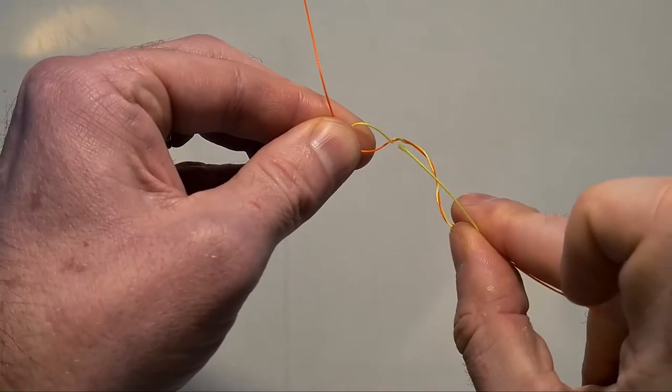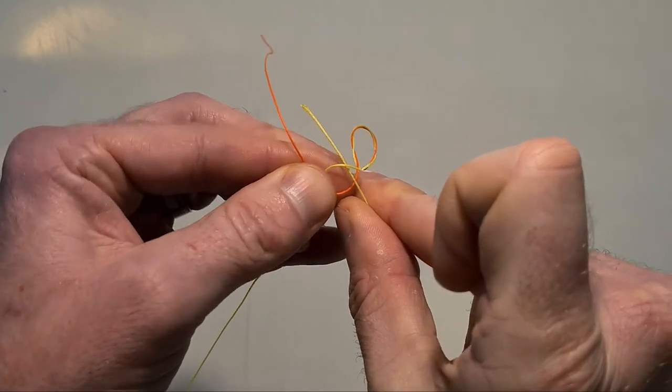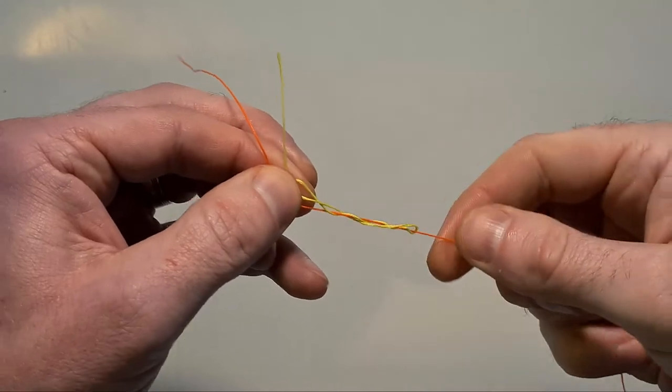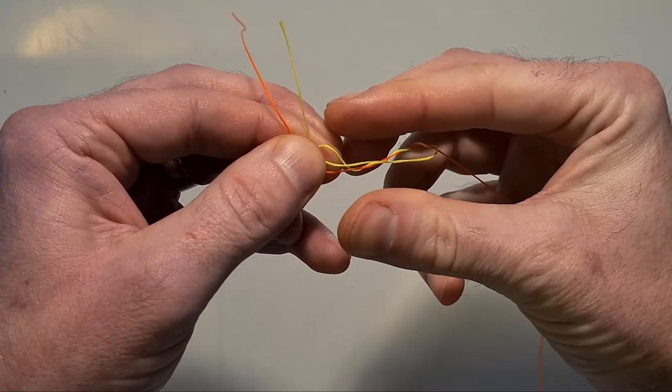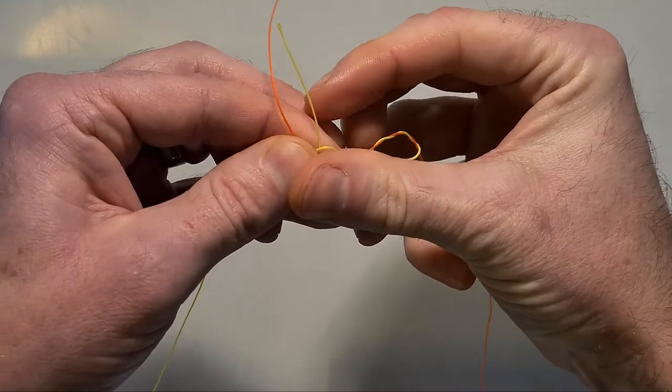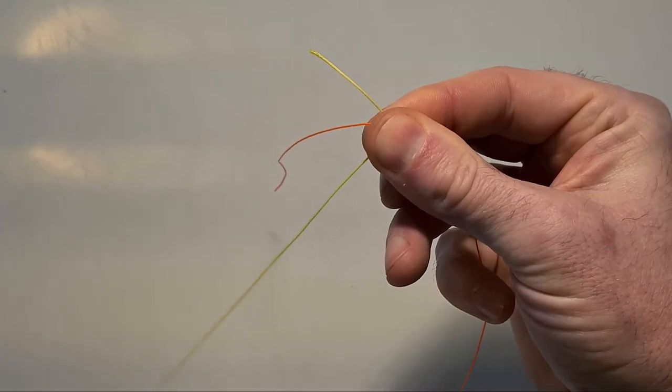And then I'm going to put this through the front of this loop that's now been created like that. Now I'm going to hold everything in place with my left finger and thumb and then I'm going to swap. So I'm going to take this half blood knot that I've tied onto the orange main line and I'm going to use my right forefinger and thumb and hold everything in place so the knot doesn't detach.